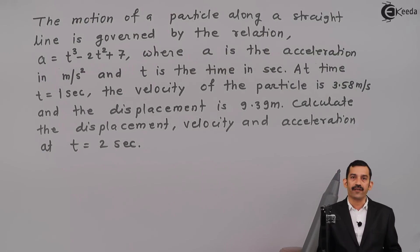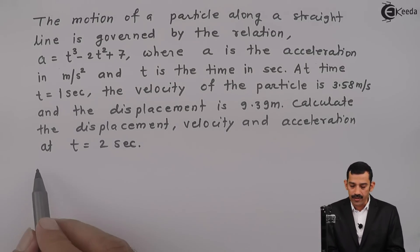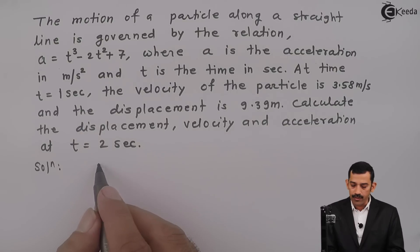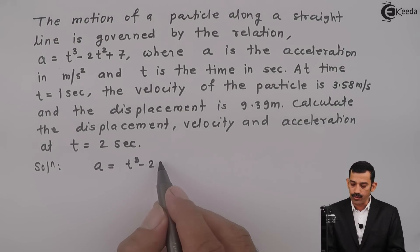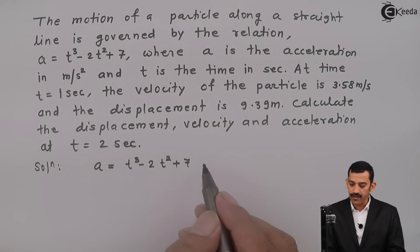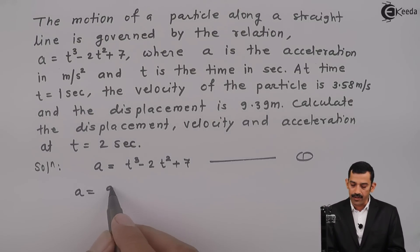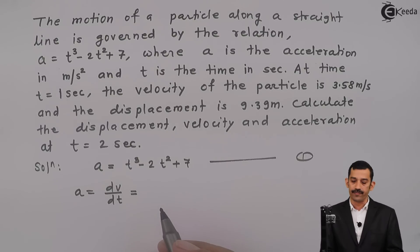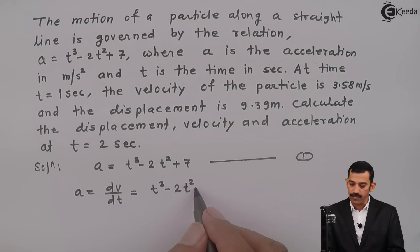If we integrate A, substituting A as dv/dt — since A is a function of time t, we substitute A in terms of time t as dv/dt. The first step in the solution: write the equation of acceleration, A = t³ - 2t² + 7 (Equation 1). Now we substitute A as dv/dt. The rate of change of velocity with respect to time is acceleration, which equals t³ - 2t² + 7.